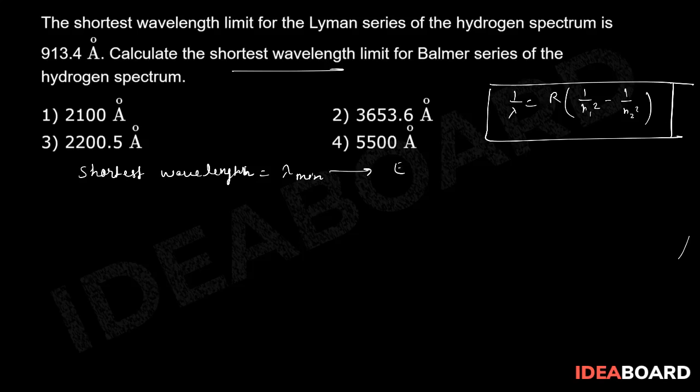So first of all understand, shortest wavelength, which is lambda min, is correlated with E max. Why I am saying this? Because we know that lambda is equal to hc by E, so lambda is inversely proportional to energy, correct?